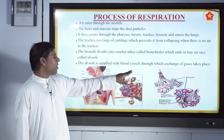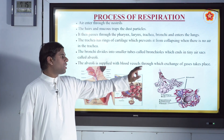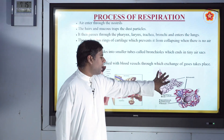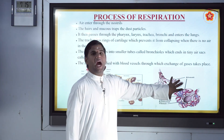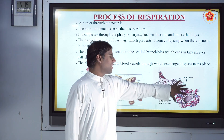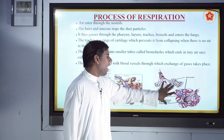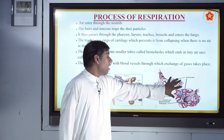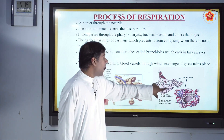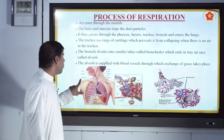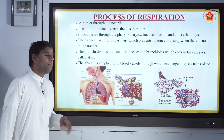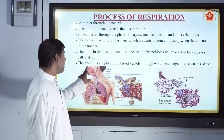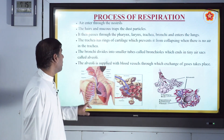The alveoli are supplied with blood vessels through which the exchange of gases takes place. Oxygen is taken inside and exchanged into the bloodstream. Carbon dioxide from the blood is brought back to the alveoli and breathed out. This exchange happens within a few seconds and is a continuous process.